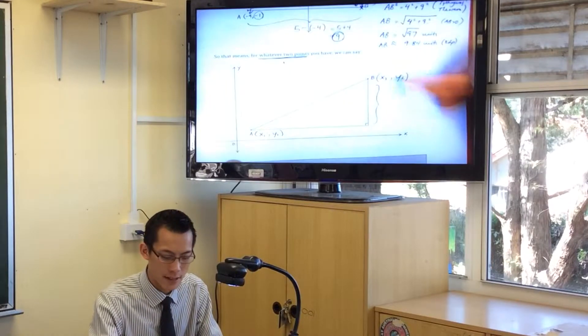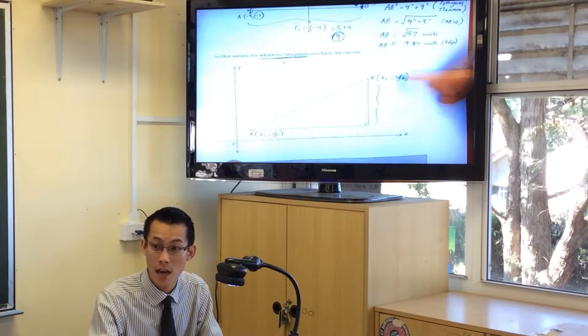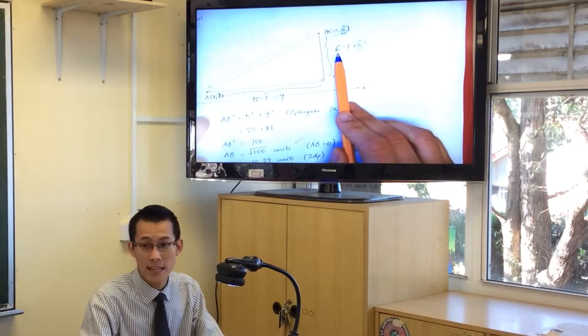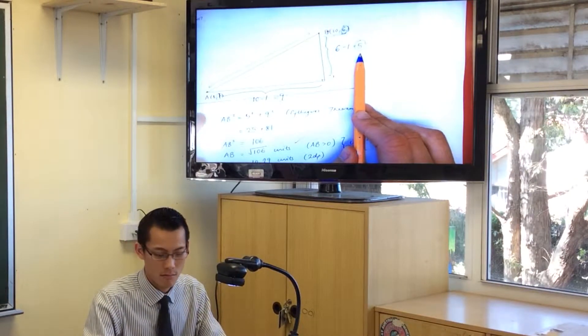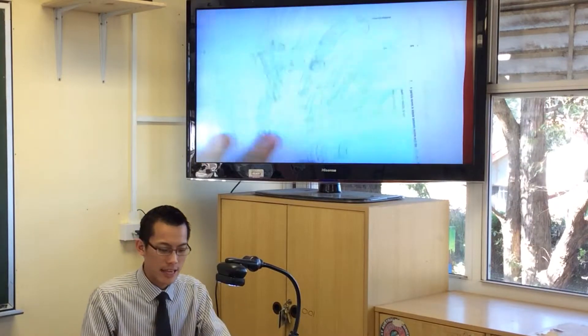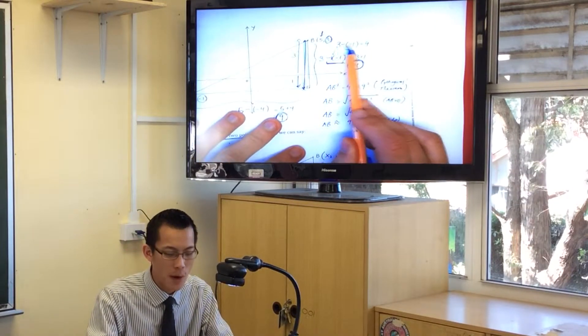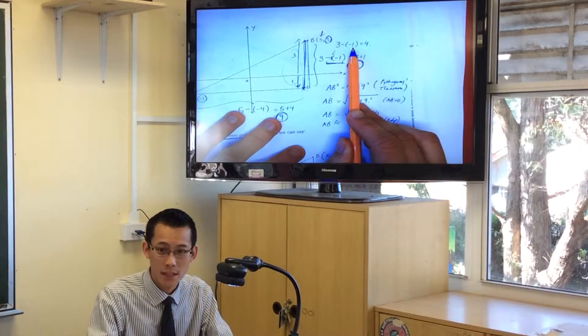Now, how did I get this vertical distance in here? Look back at the first example. I did 6 take away 1, right? Look at this next example.